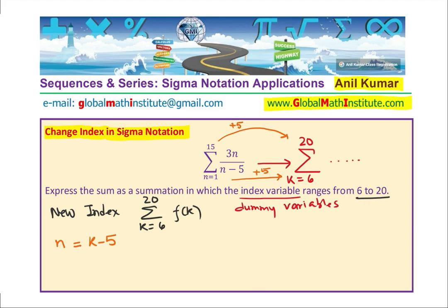So, if I replace n with k minus 5, I will get my expression. Do you see that? So, let us say we are already given this function f of n. So, what we are given here is sigma notation with n equals 1 to 15 and the expression is f of n. It is in terms of n. And now, we want to change that expression, which is 3n over n minus 5 to k. You get the idea? So, it is just kind of change of the dummy variable. By substituting n as k minus 5.